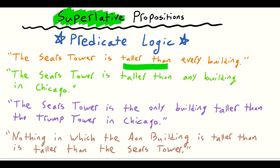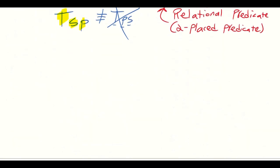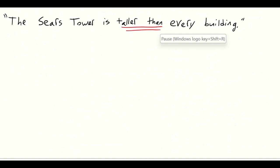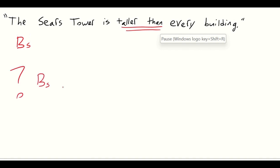We also have a universal affirmative statement, because we have that 'every,' so we're going to need a universal quantifier. It turns out we initially need to make use of identity. Consider this first main example: the Sears Tower is taller than every building. The first thing we should do is state our simple matters of fact, then get into the universal affirmative statement. We can say that the Sears Tower is a building — capital B for building, lowercase s for Sears Tower. Could we say: the Sears Tower is a building and for all x, if x is a building, then the Sears Tower is taller than x?